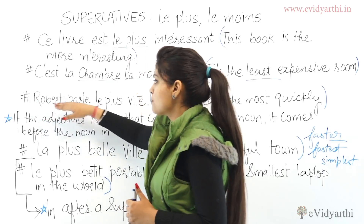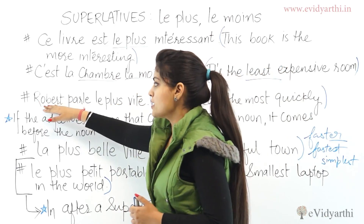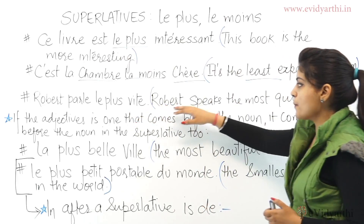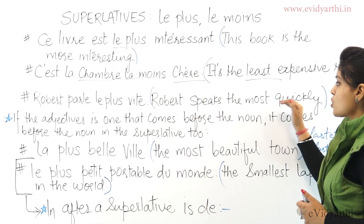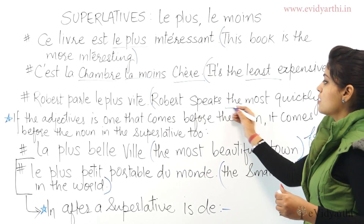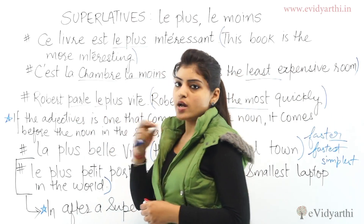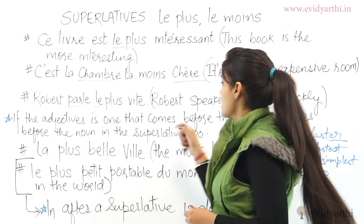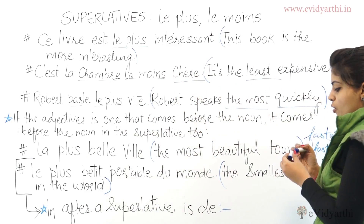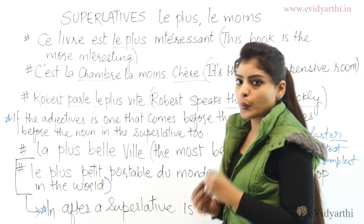Next: 'Robert parle le plus vite.' This means Robert speaks the most quickly. We use 'le plus' for 'the most', 'parle' means to speak, and 'vite' means quickly. So: Robert speaks the most quickly.